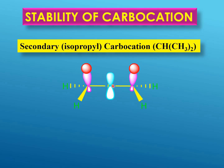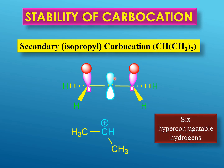When we move on to a secondary carbocation — an example of which is the isopropyl carbocation — we have three carbon atoms. The central carbon has a positive charge and therefore an empty p orbital. The two carbons adjacent to this carbocation are sp3 hybridized, and on both carbon atoms the sp3 orbitals are parallel to this empty p orbital, so they can effectively overlap. This means all three hydrogens on each adjacent carbon can overlap with the p orbital, giving a total of six hyperconjugatable hydrogens — three more than in an ethyl carbocation — making this secondary carbocation more stable than a primary carbocation.